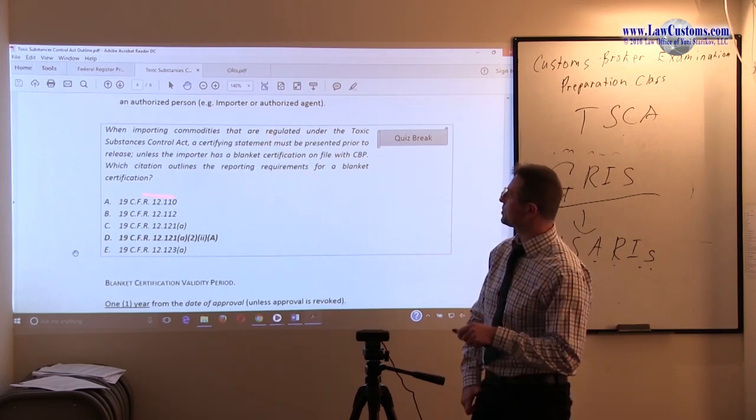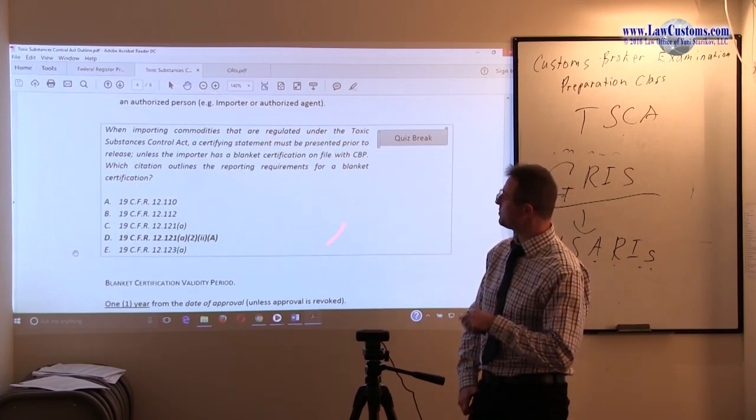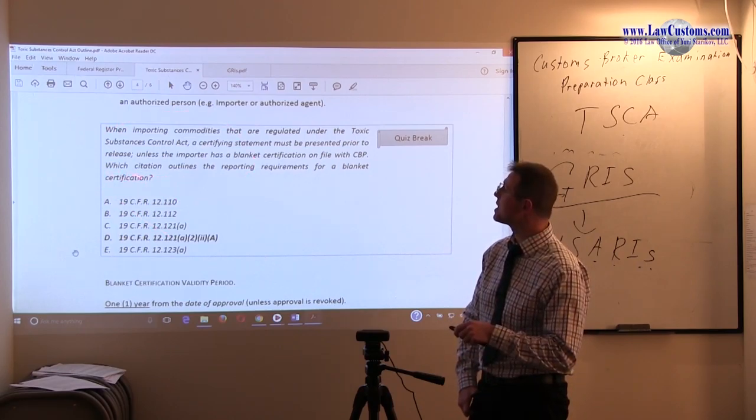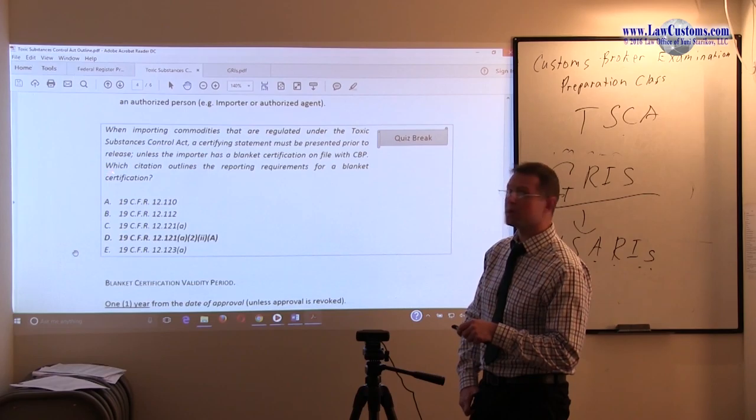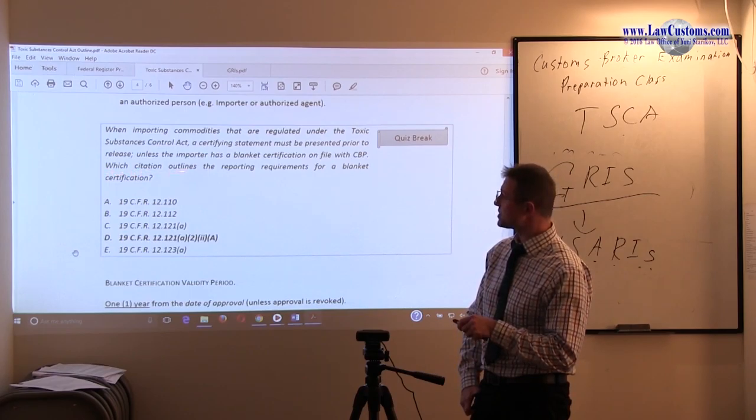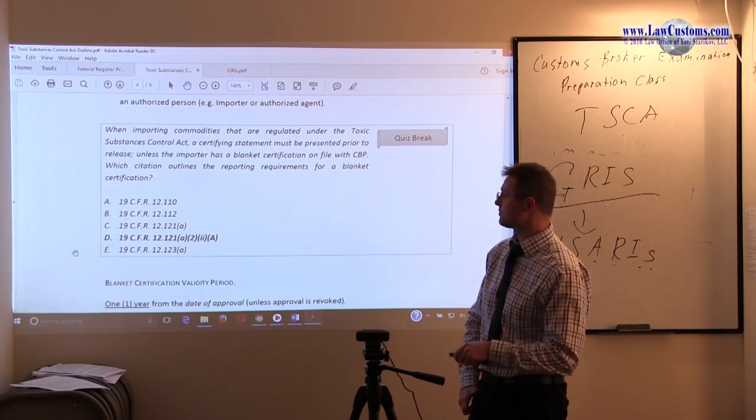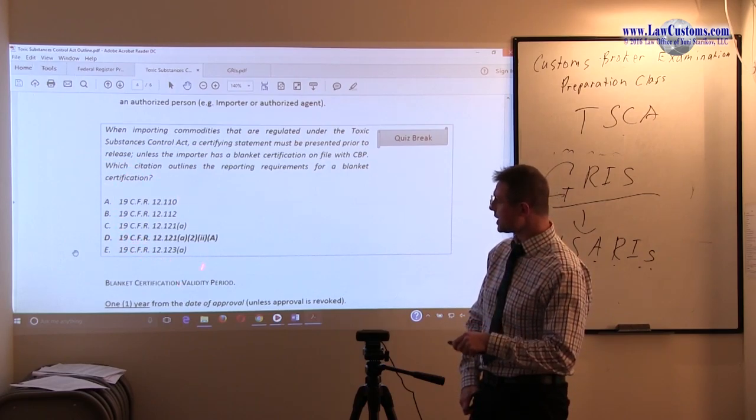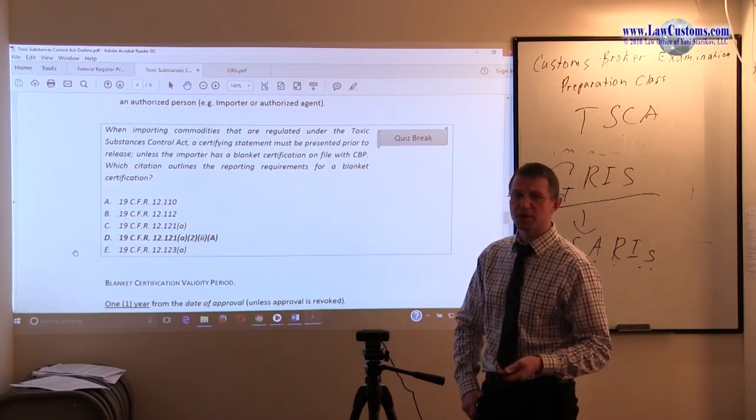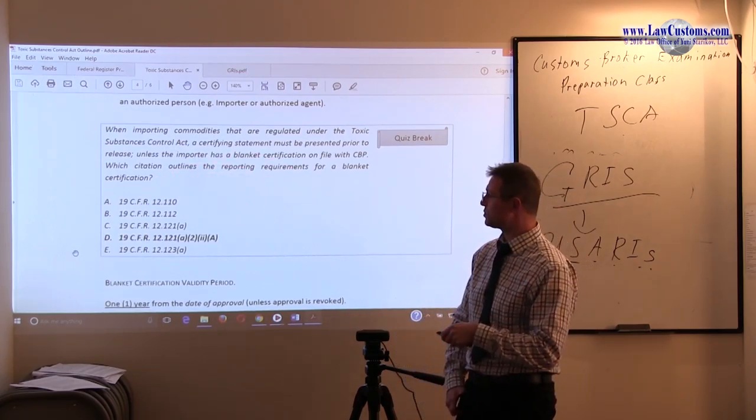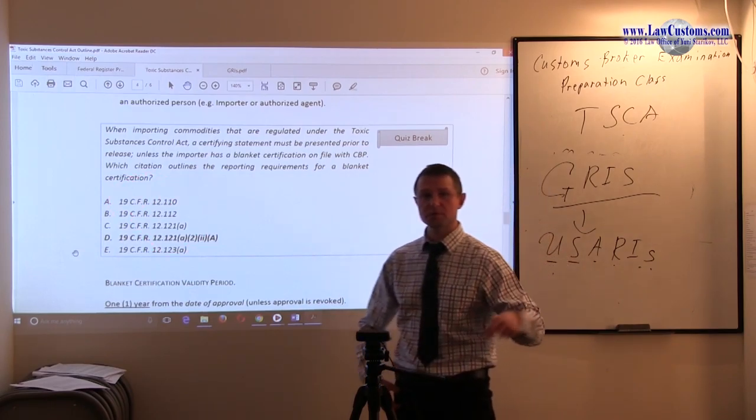So first of all, start with a question, right? When you have this type of problem, start with a question to save yourself sometimes. So you know what's going on. Forget the fact pattern, go to the question first. Which citation outlines the reporting requirement for a blanket certification? All right. So you have those regulations.